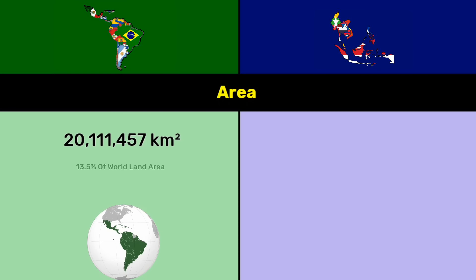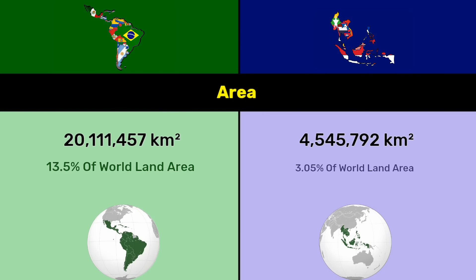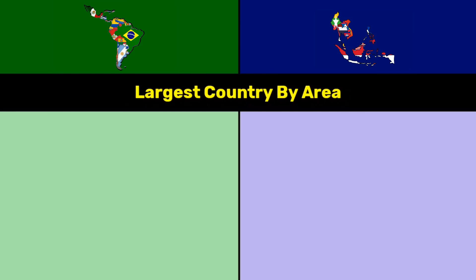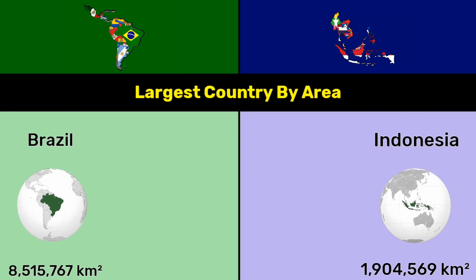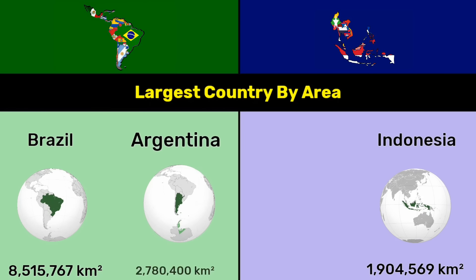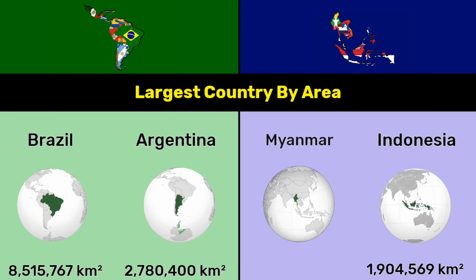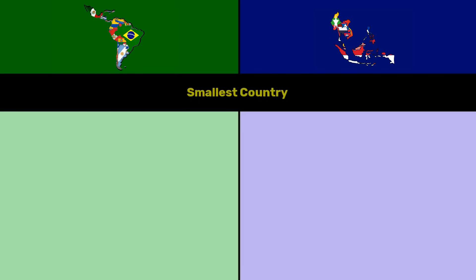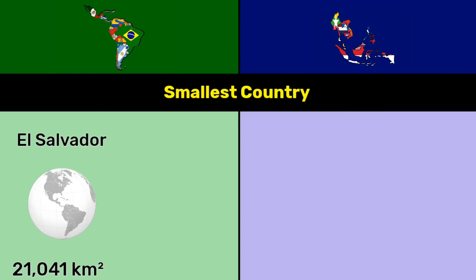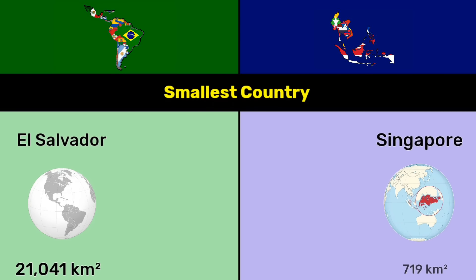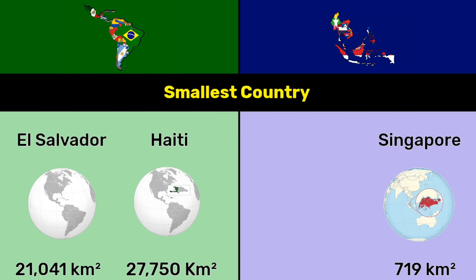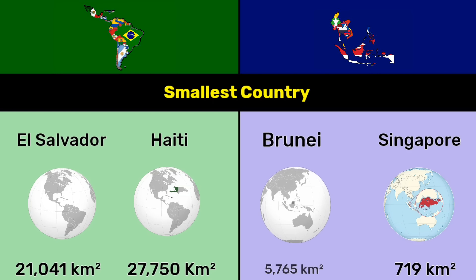Area: 20.1 million square kilometers — 13.5 percentage of world land area for Latin America, versus 4.5 million square kilometers — 3.05 percentage of world land area for Southeast Asia. Largest country by area: Brazil 8.5 million square kilometers and Indonesia 1.9 million square kilometers; Argentina 2.7 million square kilometers and Myanmar 676,578 square kilometers. Smallest country: El Salvador 21,041 square kilometers versus Singapore 719 square kilometers; Haiti 27,750 square kilometers versus Brunei 5,765 square kilometers.